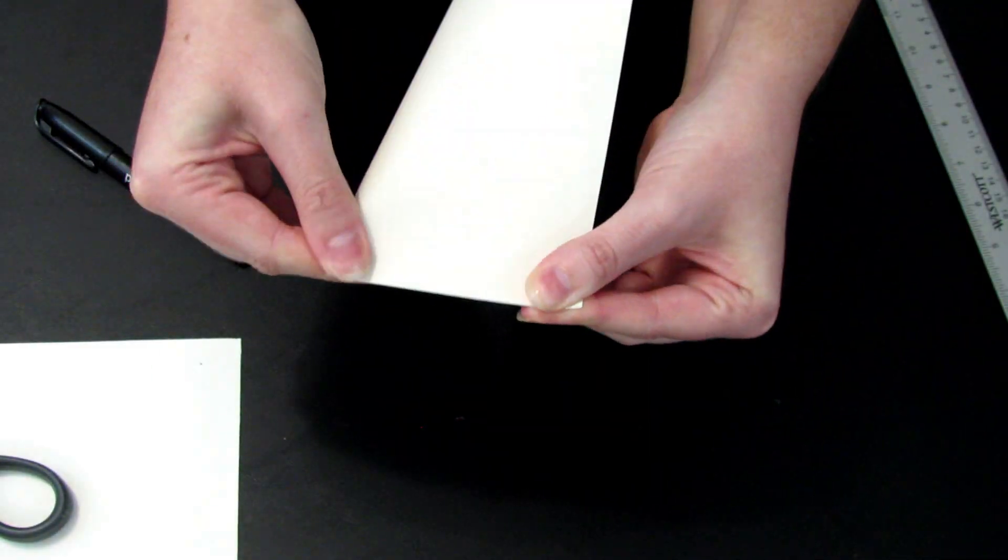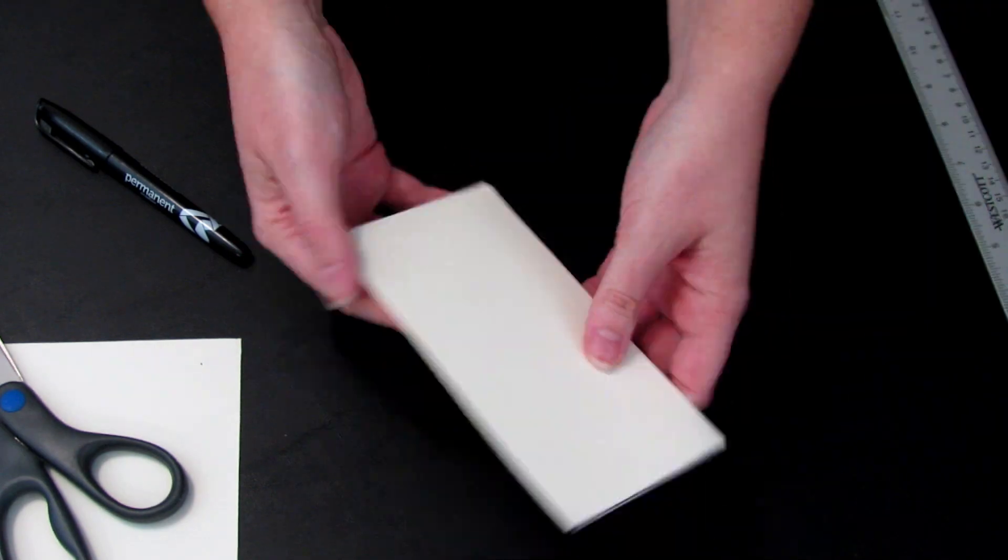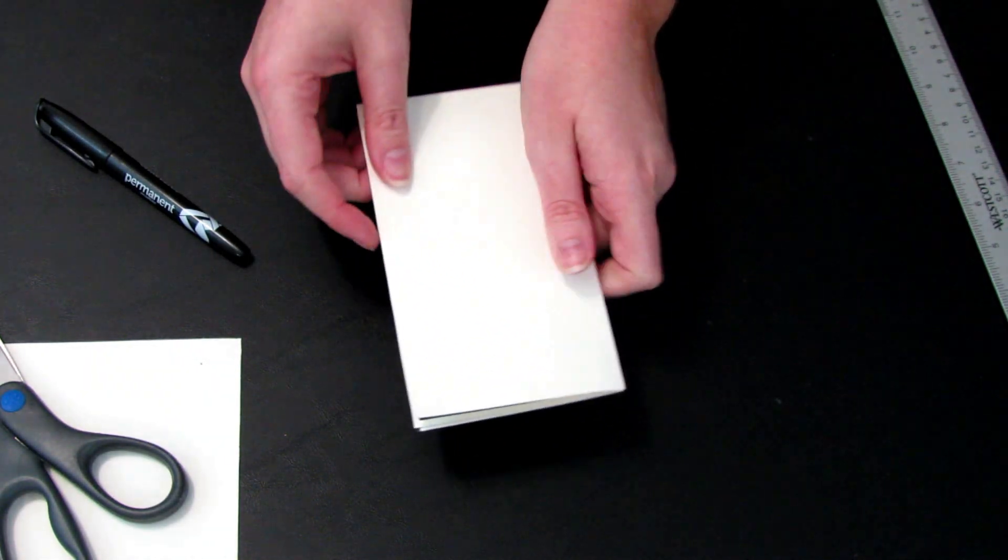Fold this piece in half and then in half again so you can cut round corners. Make sure you are cutting on the open edges. We aren't making a snowflake.